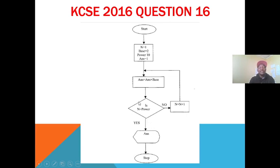If N does not equal Power — condition is false — we increment N by one and the process continues. When asked to interpret a flowchart, you write an explanation of exactly what the flowchart is doing, like a story or context. You can also opt to write pseudocode — these are English-like statements that explain how an algorithm in flowchart form works.